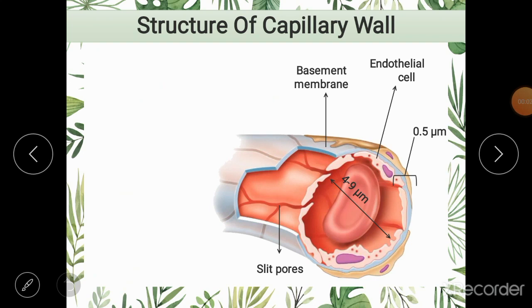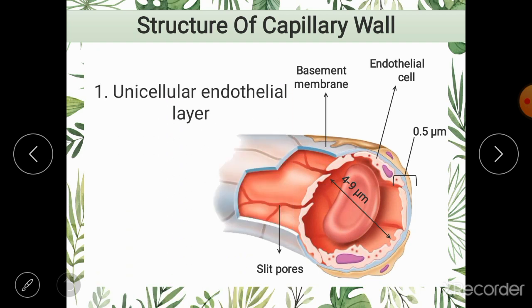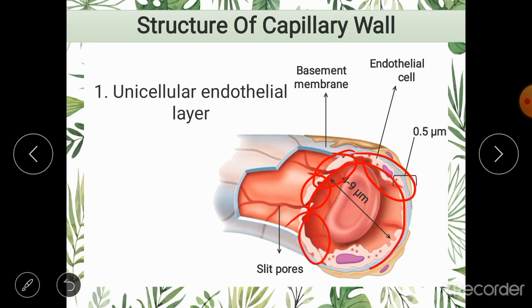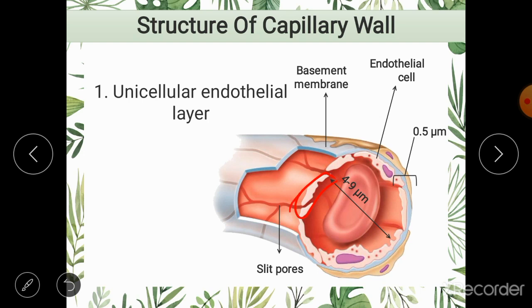You can see a typical capillary which can be found in many sites and organs of the body. What you need to remember is that a capillary wall is always one cell thick — it has a unicellular endothelial layer. Here you can see one endothelial cell, and another, and another — only one layer of endothelial cells makes up the wall. There is no stacking of endothelial cells.